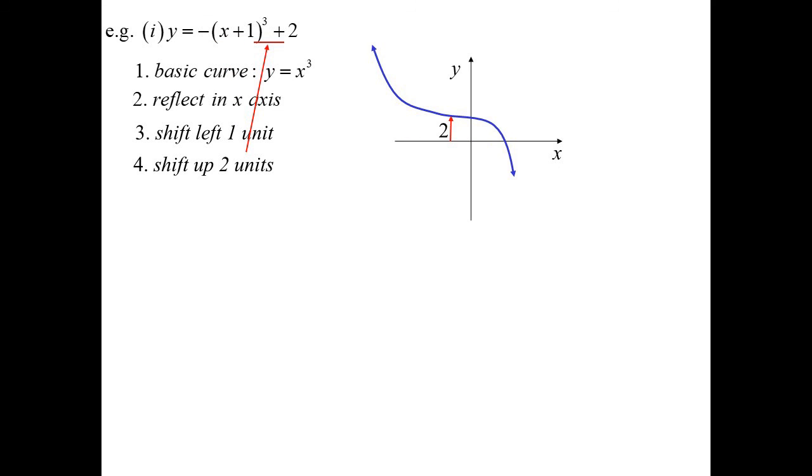y equals minus x plus 1 cubed plus 2. So it's our basic cubic. We have a reflection happening because it's minus x plus 1 cubed. Do the reflection first, so there's the reflection. Now we'll do our shifting. Left 1 unit and up 2 units. And there's our picture.